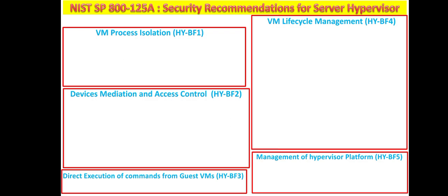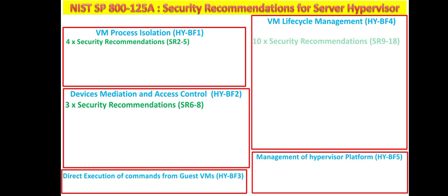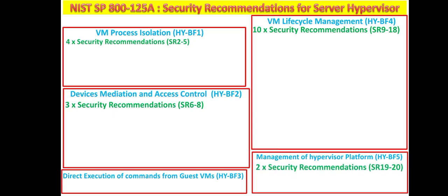There are a total of 20 security recommendations related to these baseline functions. For example, security recommendations two through five are related to VM process isolation, the next three are related to device mediation and access control, the next ten are related to VM lifecycle management, and the last two are related to hypervisor platform management.